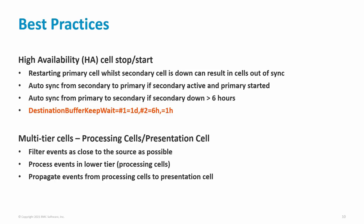Consider implementing a tiered cell architecture. Events can be filtered and processed in lower tiers, then propagated up to a top-level presentation cell — the TSIM server cell. This will greatly reduce the load on the top-level cell as it would only perform minimal processing. Some customers have implemented a different cell for use by the rate process for just this purpose, and details on how to do that are in the BMC documentation.